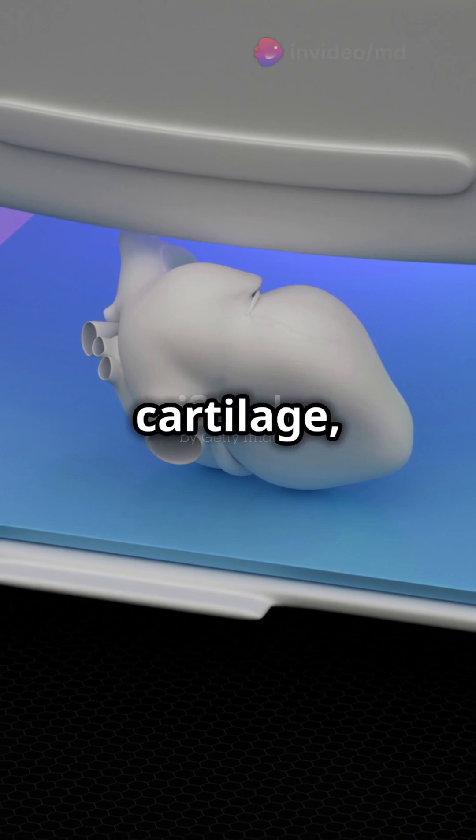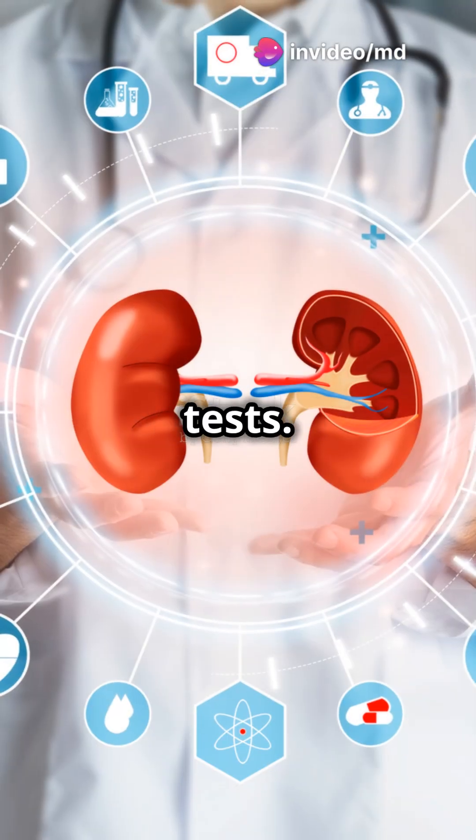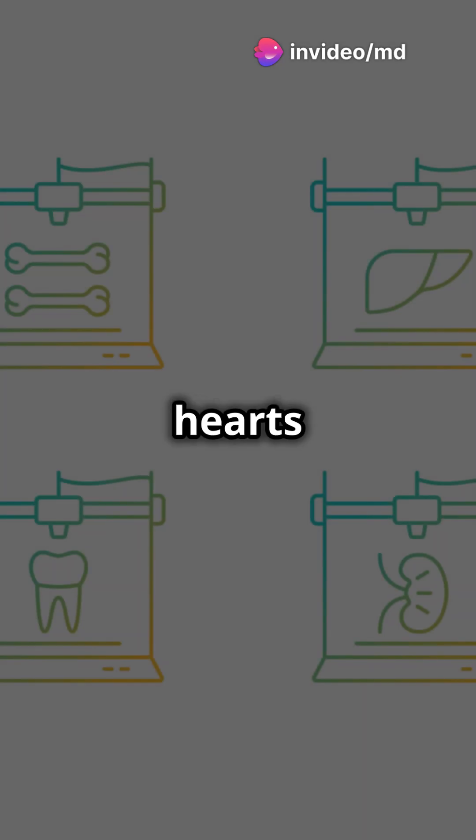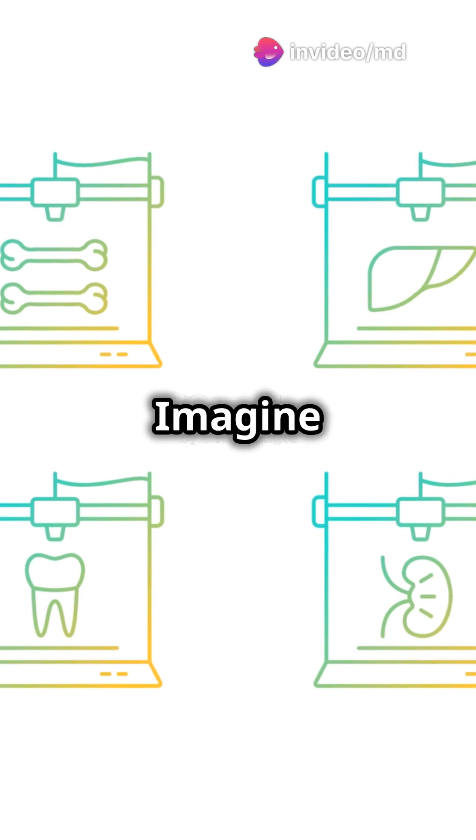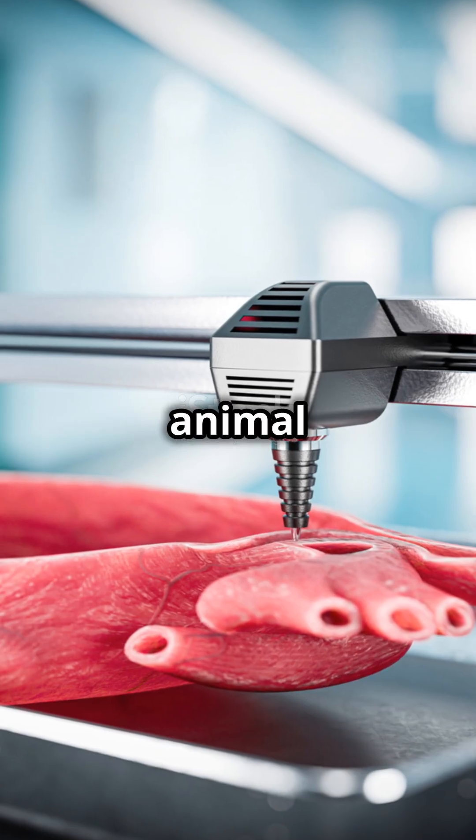We're already printing skin, cartilage and mini kidneys for tests. Full organs like hearts and lungs are next. Imagine no more organ shortages and less animal testing.